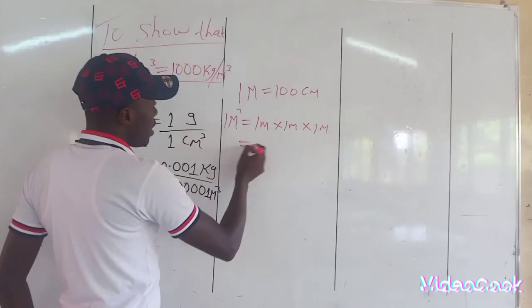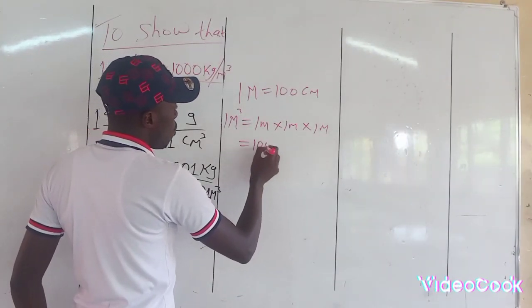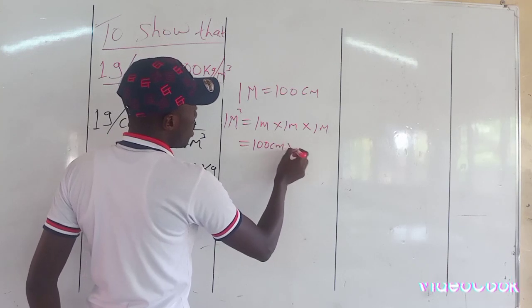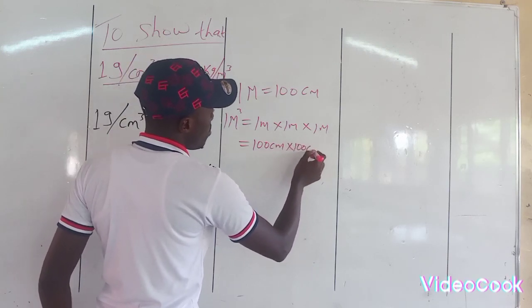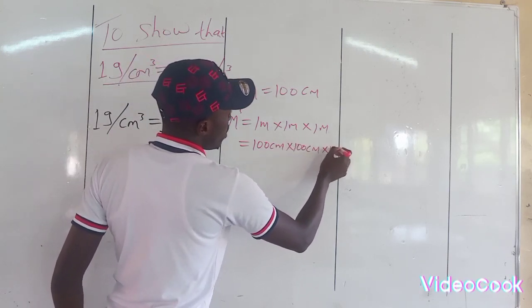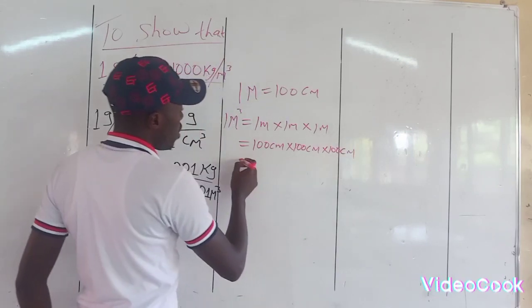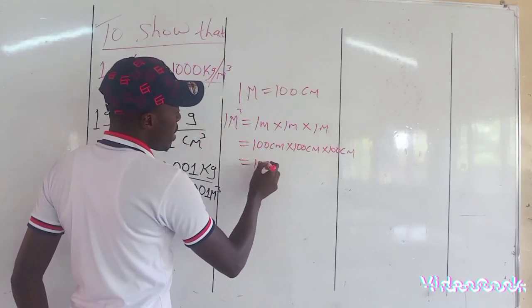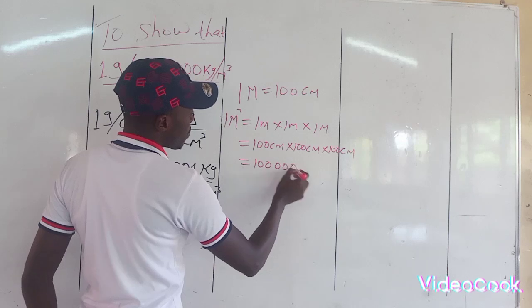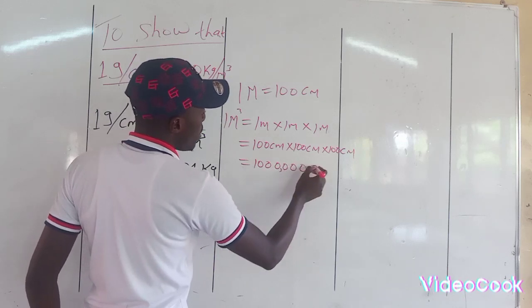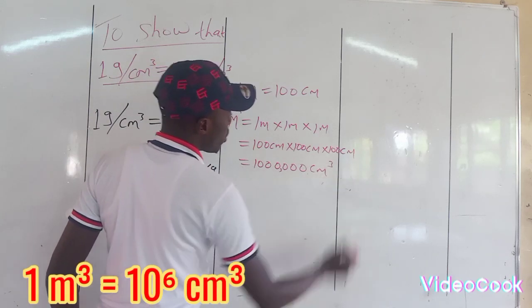In this case, it simply implies 100 centimeters times 100 centimeters times 100 centimeters, which means 1 million centimeters cubed.